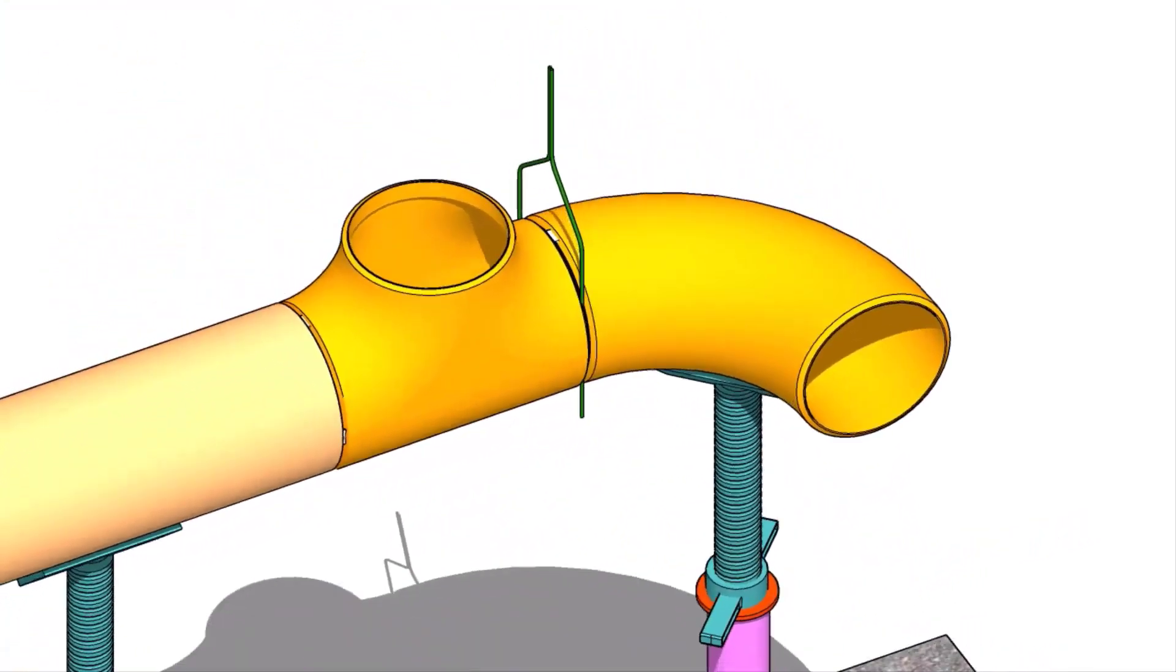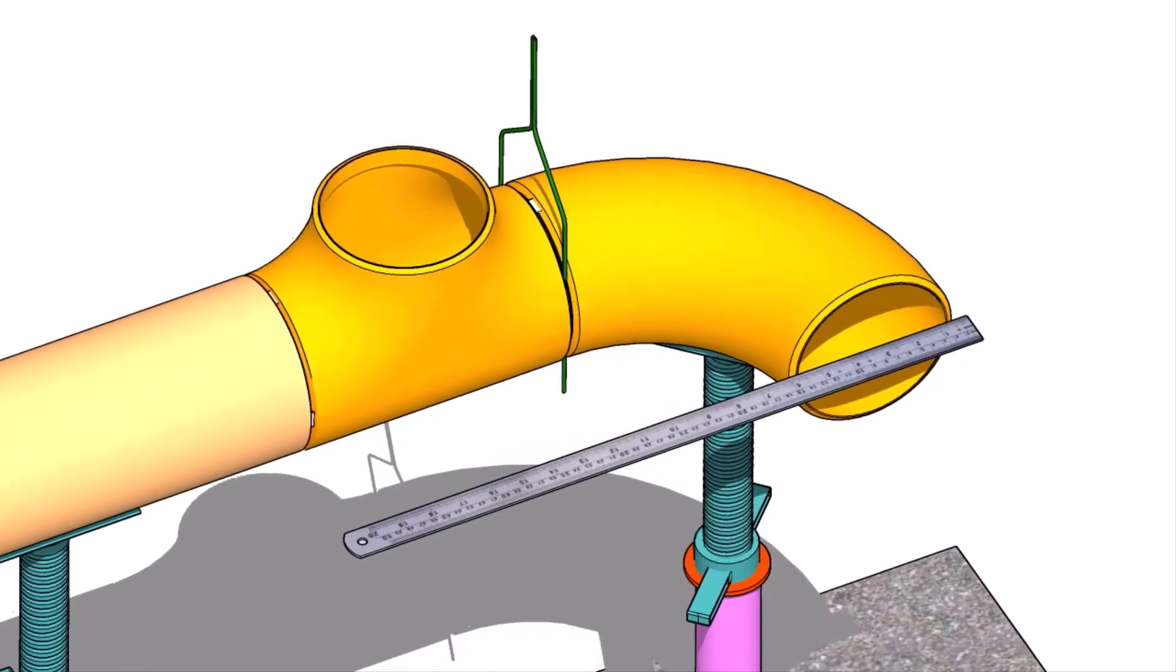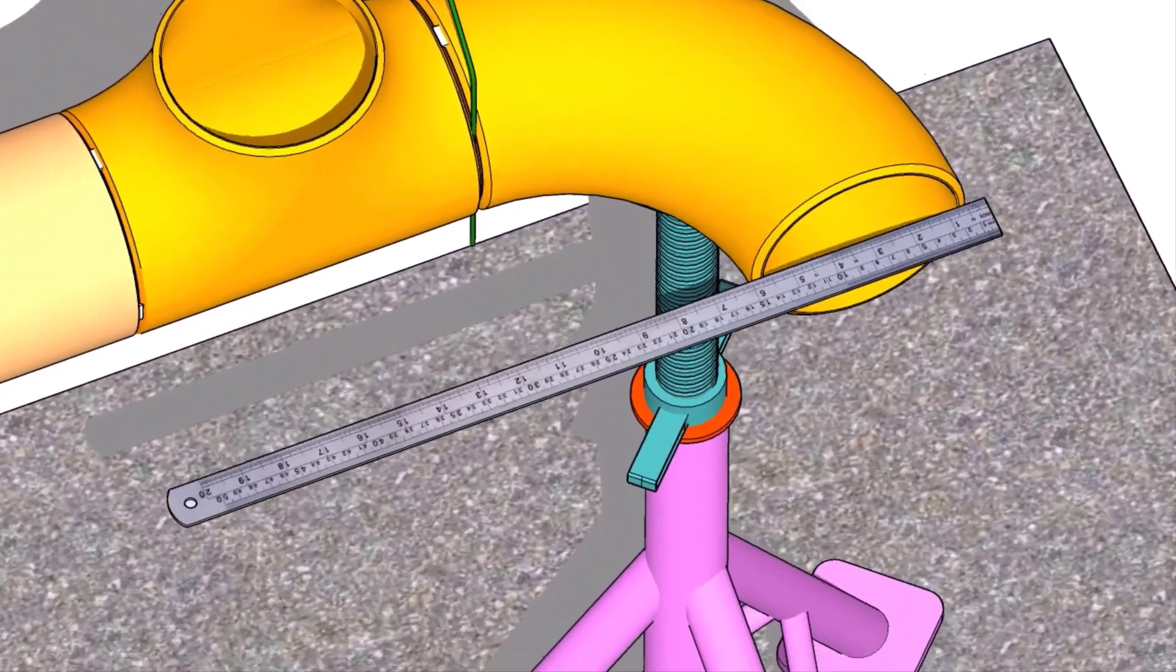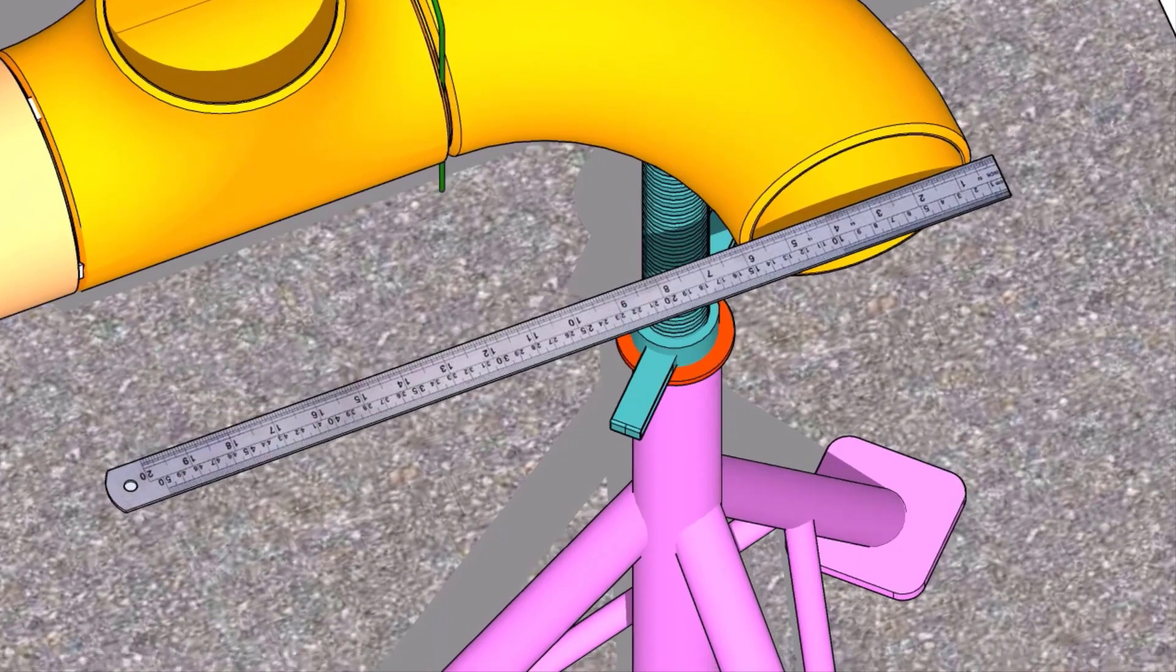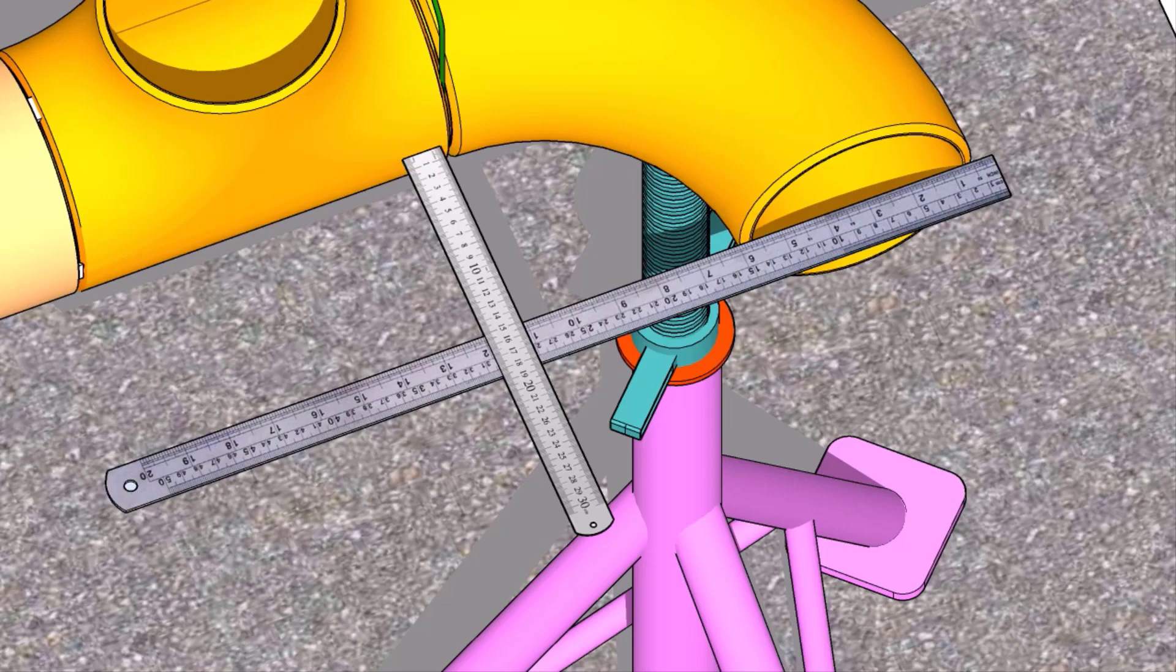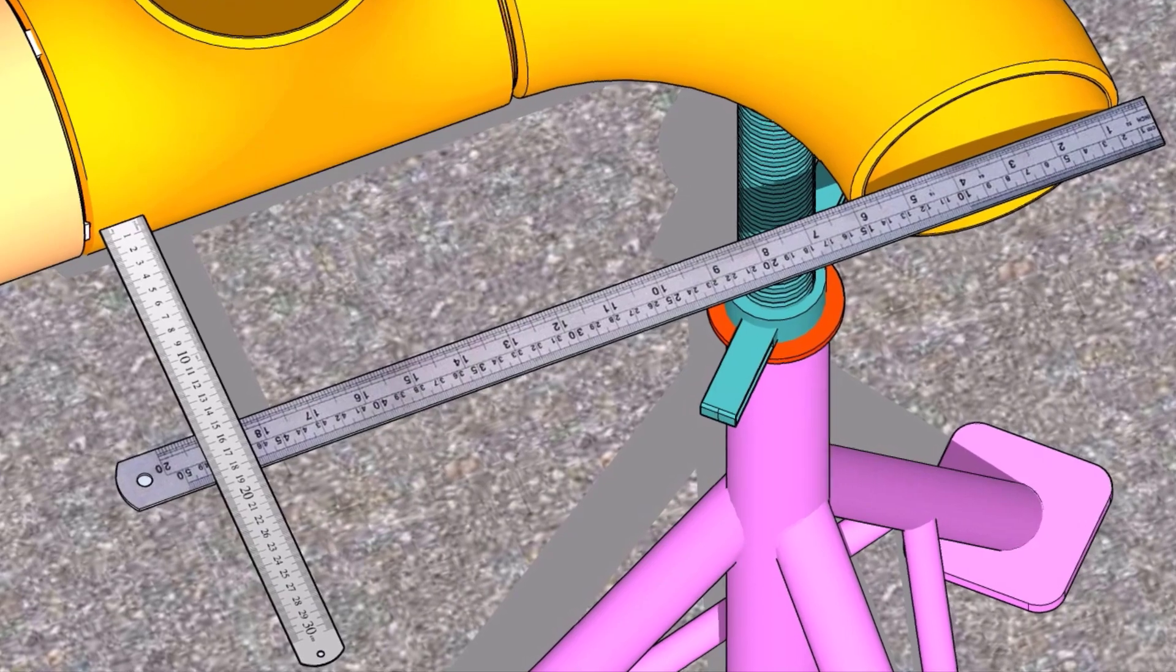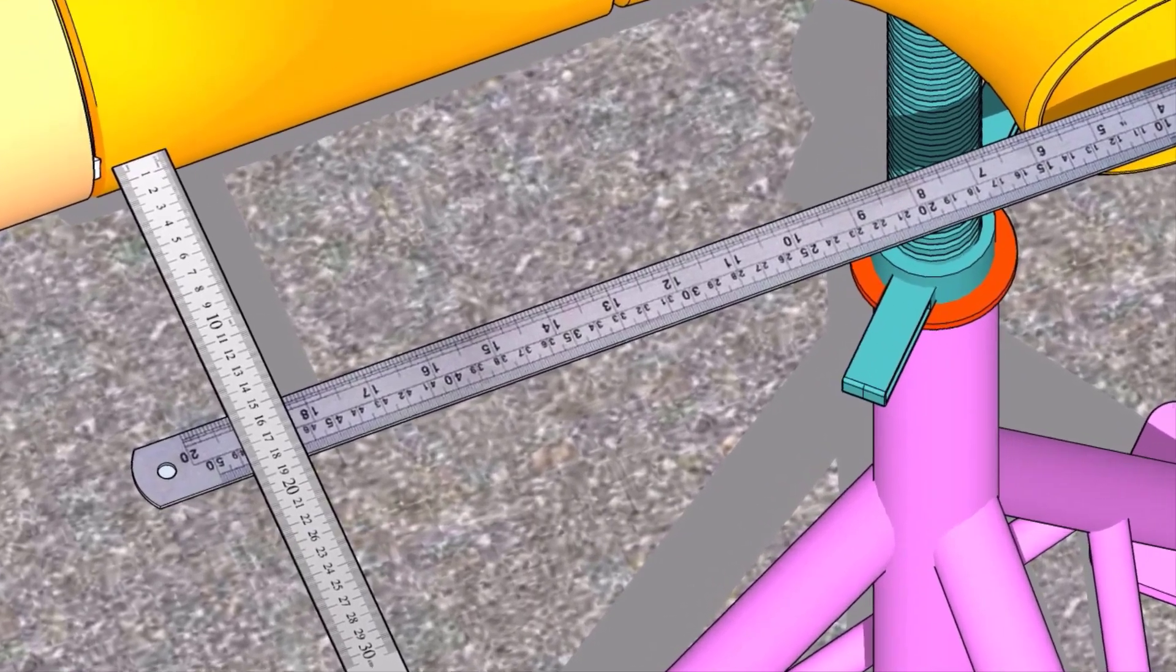Now, put a scale on the face of the elbow horizontally. Check the distance between the scale and the side of the tee at its ends as shown. If necessary, turn the elbow as required and maintain both the measurements equal.